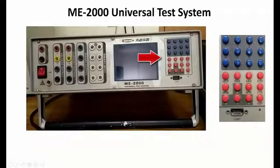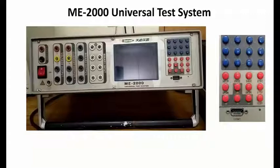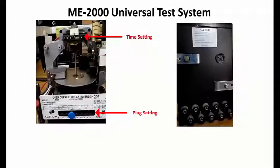On the right side of the display is the input panel, which is used to program the testing system in order to test the relay under consideration. Below this input panel there is a socket for connecting a computer. In fact, this universal test system can also be programmed using a computer.